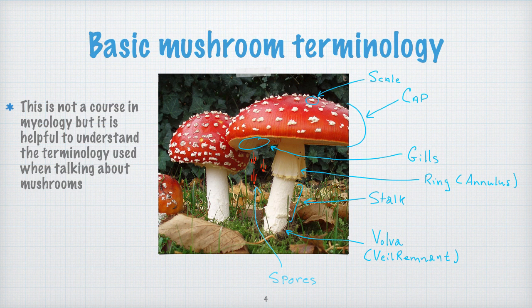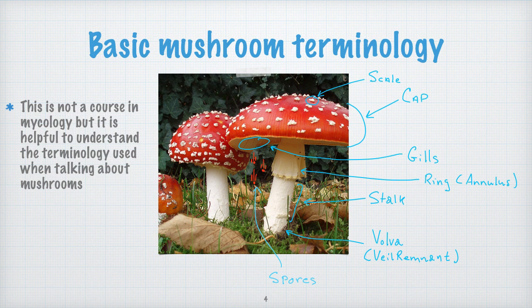Underneath the cap you have a ring, also known as an annulus, and a stalk. At the very bottom, mushrooms often come out of the ground, dead or rotting trees, or sometimes fecal matter — particularly cow pies. You have what's called the volva, or veil remnant. When a mushroom first comes out it emerges in a veil; the stalk emerges from that veil, which separates into an upper part becoming the ring and a lower part becoming the veil remnant, with the cap emerging from that.